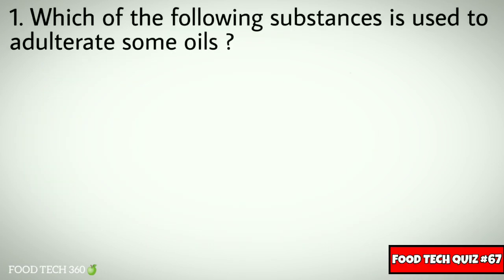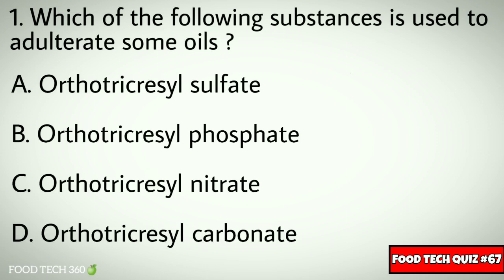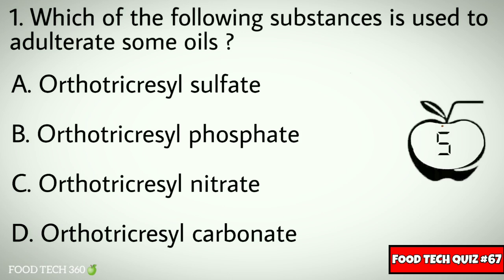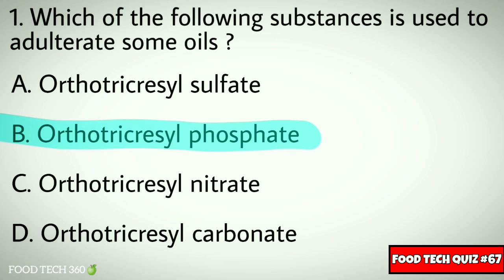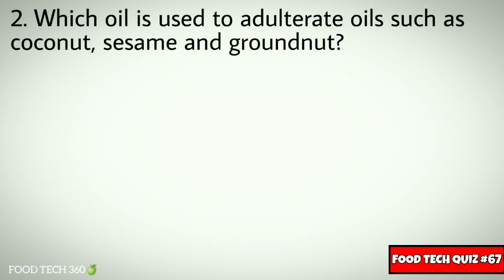Question number one: which of the following substances is used to adulterate some oils? Options: A) orthotricresyl sulfate, B) orthotricresyl phosphate, C) orthotricresyl nitrate, D) orthotricresyl carbonate. Correct answer: B) orthotricresyl phosphate.